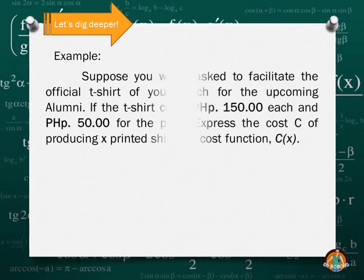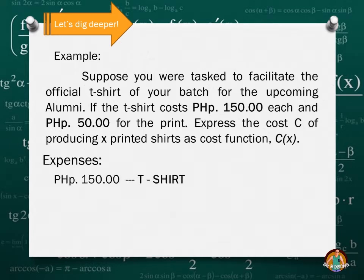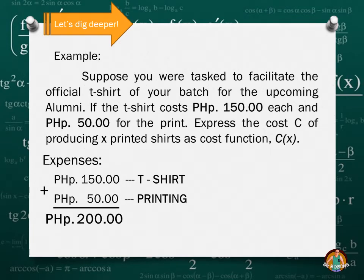Example: Suppose you were tasked to facilitate the official t-shirt of your batch for the upcoming alumni. If the t-shirt costs 150 pesos each and 50 pesos for the print, express the cost C of producing X printed shirts as cost function C(x). So first, let's summarize the expenses. For expenses, we have 150 for the t-shirt and 50 pesos for the printing, a total of 200 pesos.